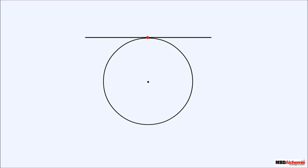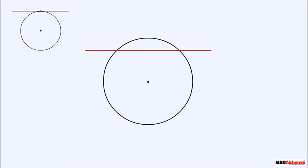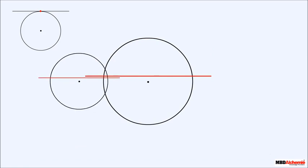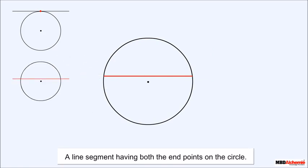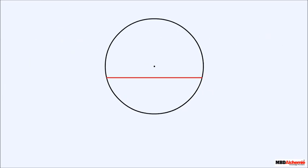Now we have three things: first, a line segment that touches the circle at only one point; second, a line segment which goes through the circle from both ends; and third, a line segment having both end points on the circle. The first one is called a tangent, the second one is called a secant, and the third one is called a chord.